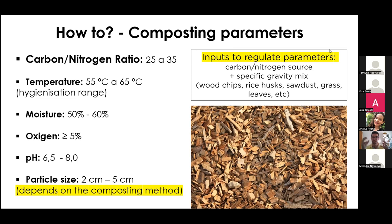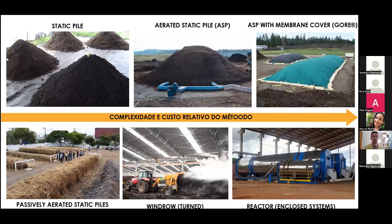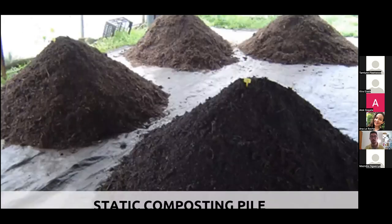Composting is a process where you mix nitrogen-rich material with carbon-rich material such as wood chips, rice husks, sawdust, leaves, and grasses. You always need this mix of two elements for good composting. There are an enormous number of composting methods, from simple ones to more complex ones, and as complexity increases toward the right on the slide, costs also increase.